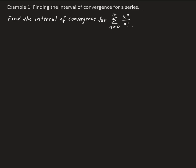In this example, we want to find the interval of convergence for the given series. The series we have here is for the function e to the x. Recall that the Maclaurin polynomial for e to the x, if we expand it out for the first few terms, gives us 1 plus x, plus x squared over 2 factorial, plus x to the power 3 over 3 factorial, and so on. We can express this function as an infinite series.